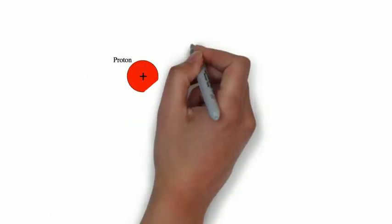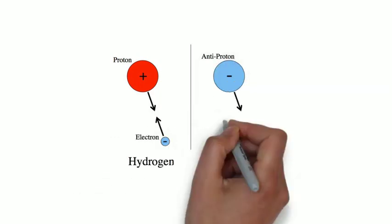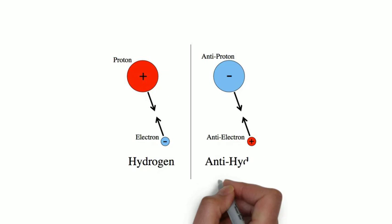Antimatter has an opposite electric charge to its matter counterpart. For example, protons have a positive electric charge, their antimatter counterparts, called antiprotons, have a negative electric charge.